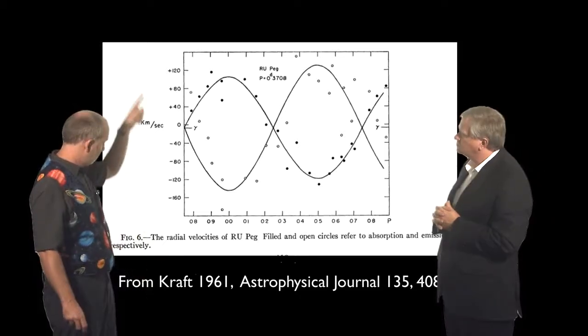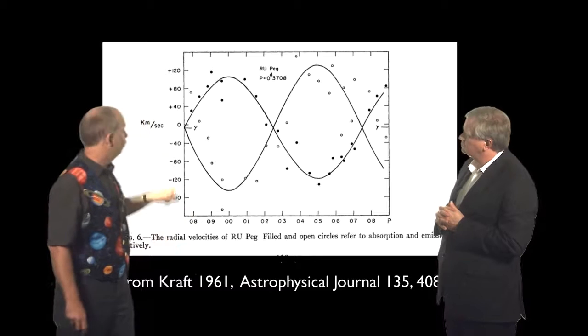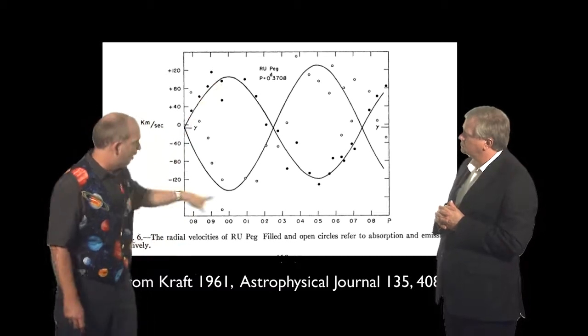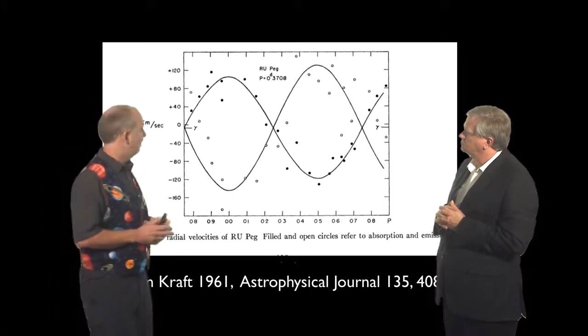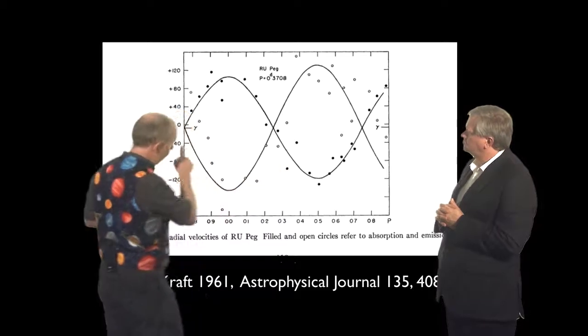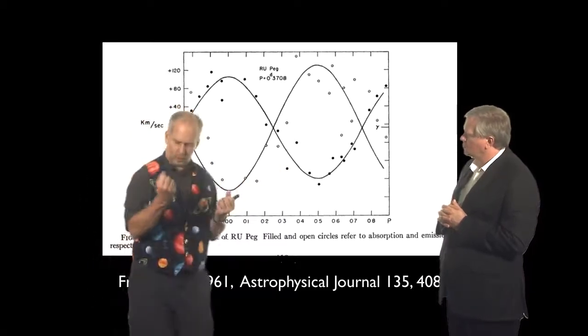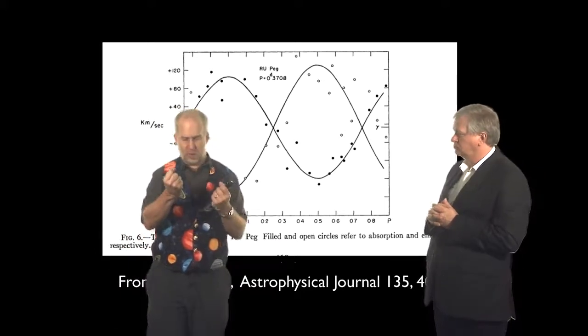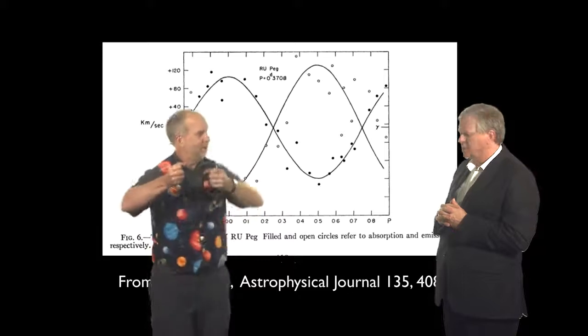Here is the velocity in kilometers per second. The filled circles are the absorption from the red star and the hollow circles are the emission from the lines. You can see they're doing different things. The absorption starts off moving away from us then comes towards us, whereas the emission does the reverse. The red star starts off going away while the gas comes towards us, then vice versa. They're alternating.